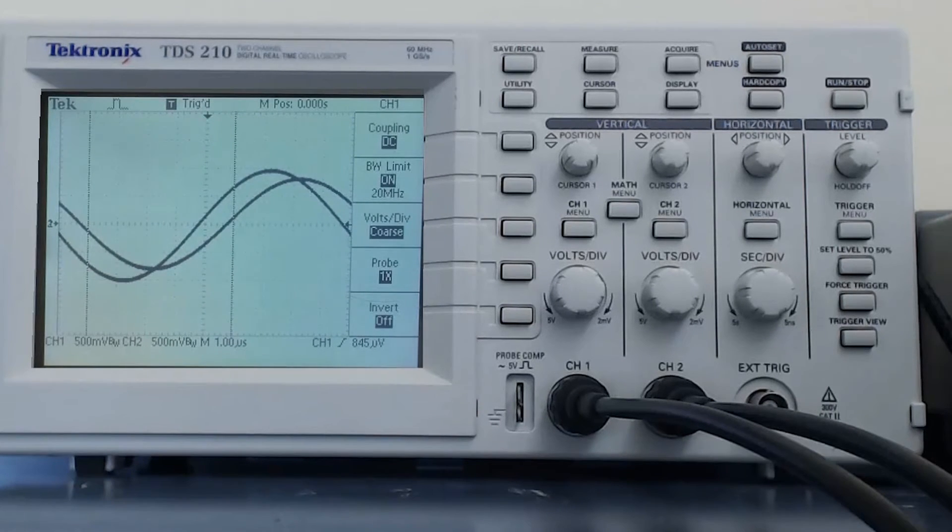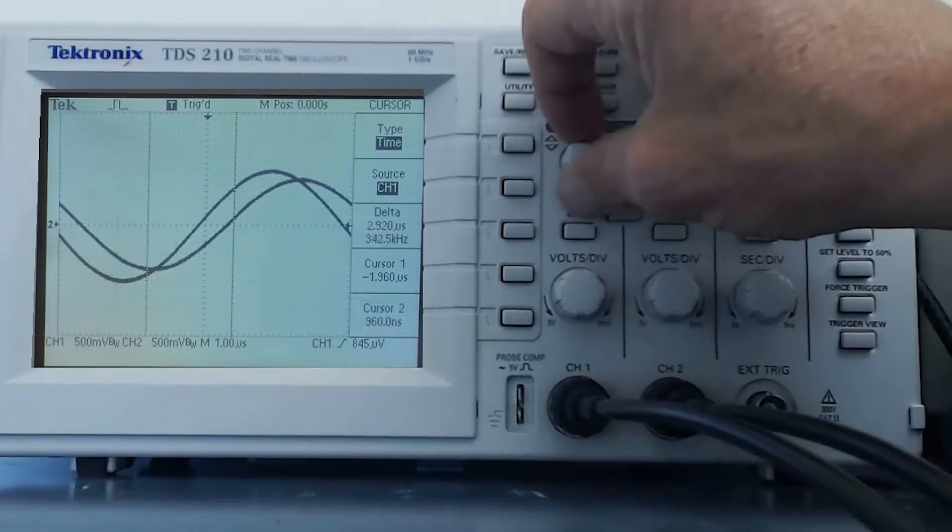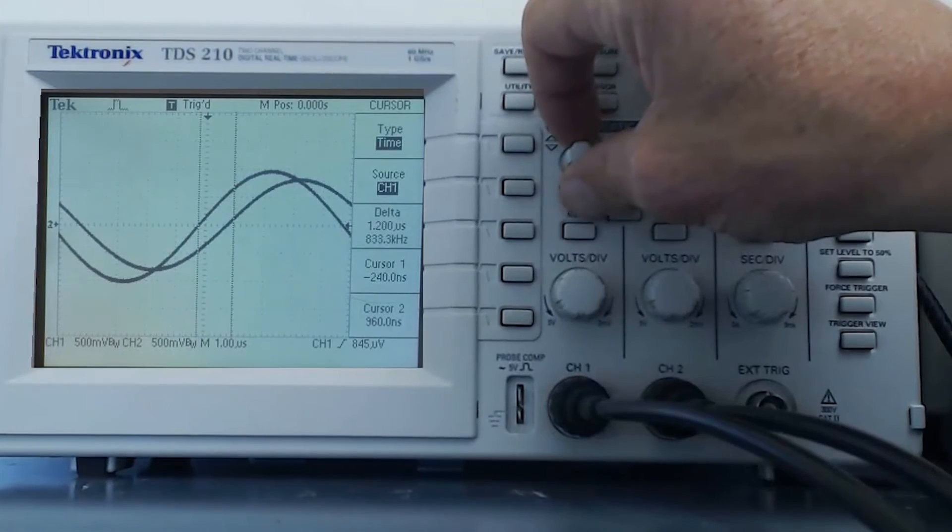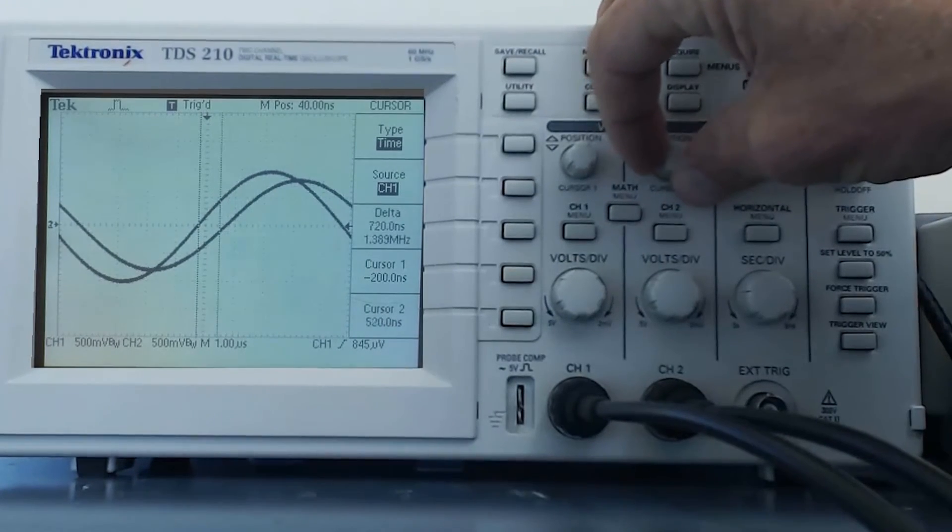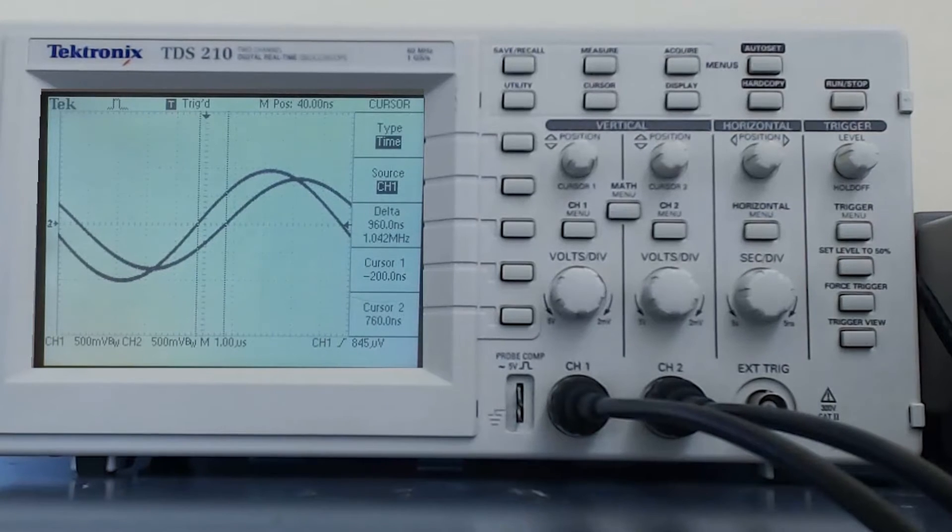If I position the two waveforms to have the same zero crossing, I can put one of the cursors on the input wave and the other cursor on the zero crossing of the output wave. And we see the shift in time of nearly one microsecond.